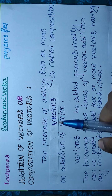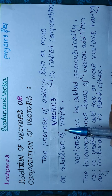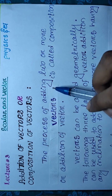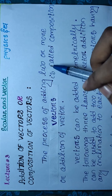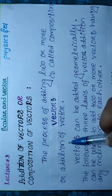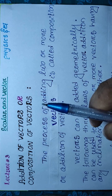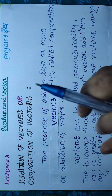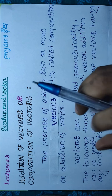In this video, we will understand how vector quantities are added. See the definition: the process of adding 2 or more vectors is called composition or addition of vectors.